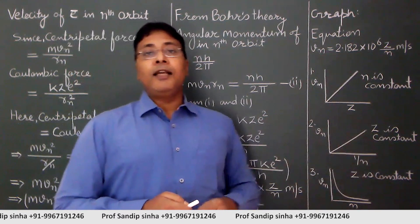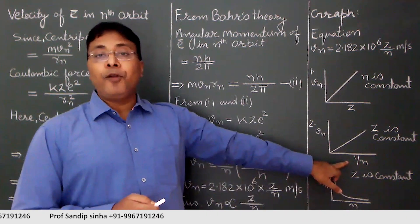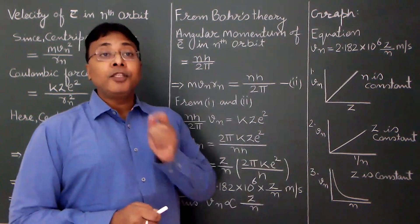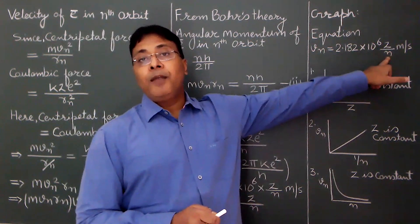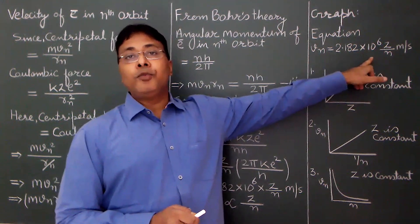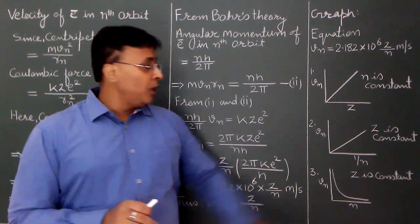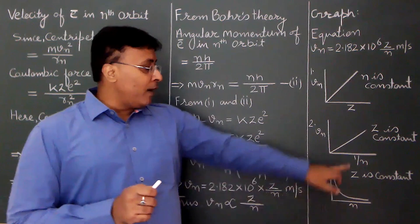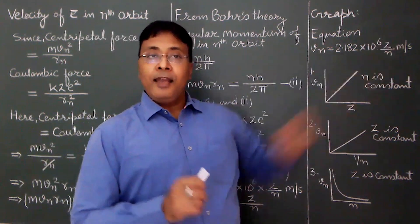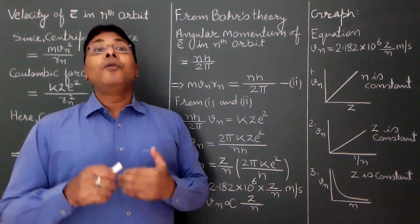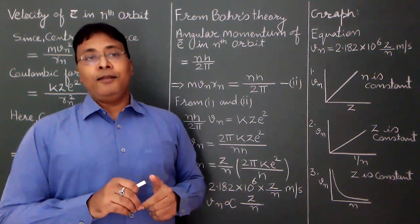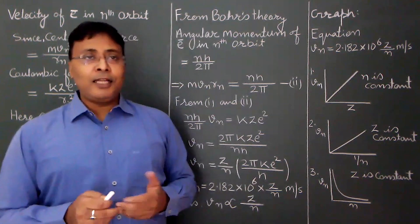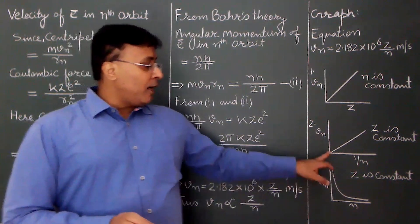For the vn versus 1/n plot, with 1/n on the x-axis and vn on the y-axis: since z is constant here, 2.182 × 10⁶ × z is a constant k. So vn = k × (1/n), giving y = kx. Again y-intercept is zero, so this graph is also a straight line passing through the origin.